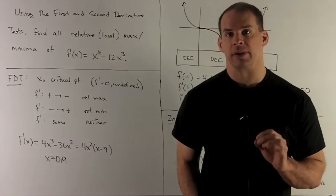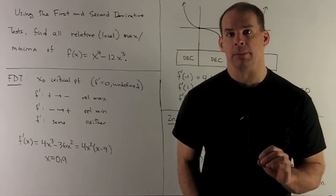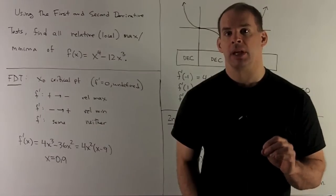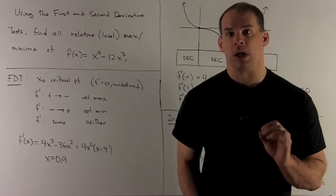Using the first and second derivative tests, find all relative maxima and minima of the function f(x) = x^4 - 12x^3.